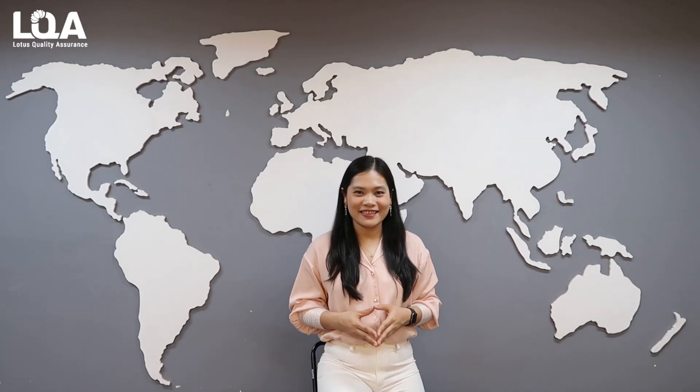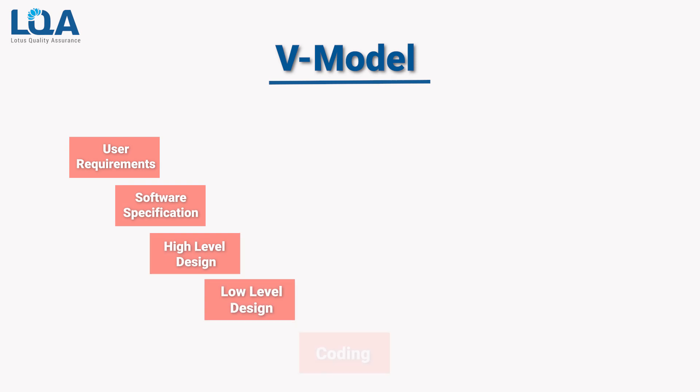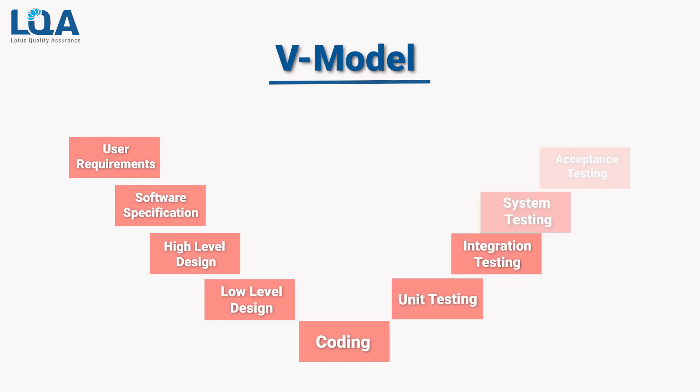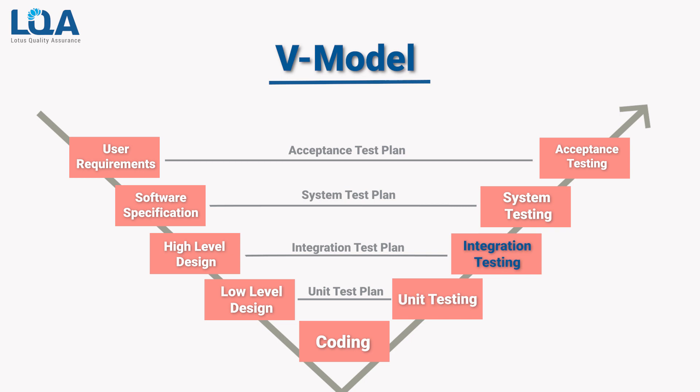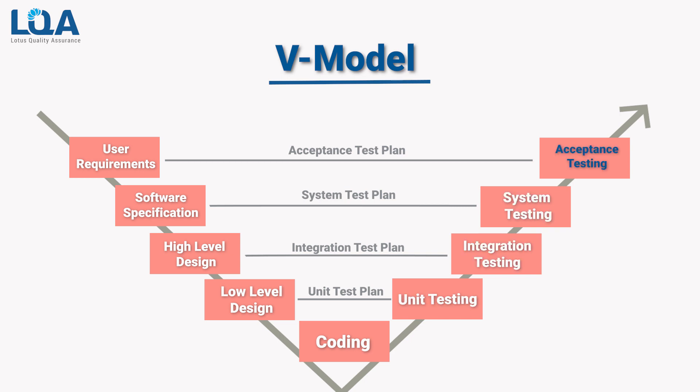Let's get started. Have you ever heard about the V-model? As you can see in our picture, there are 4 testing levels ordered from the bottom to the top: unit testing, integration testing, system testing, and acceptance testing.